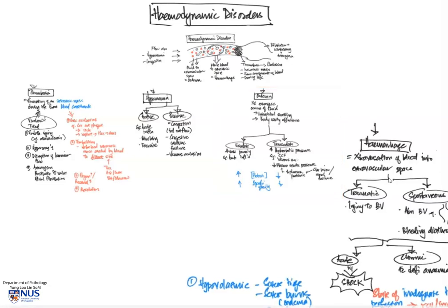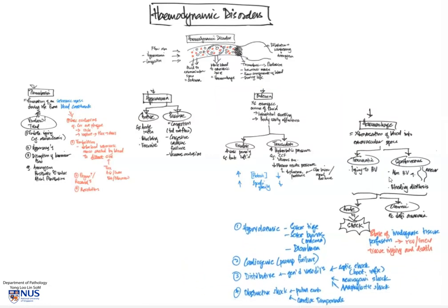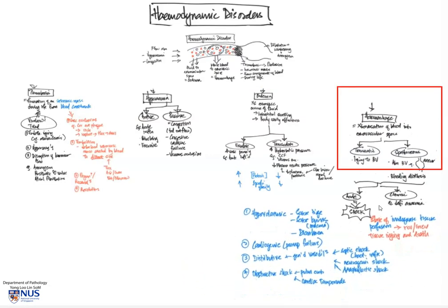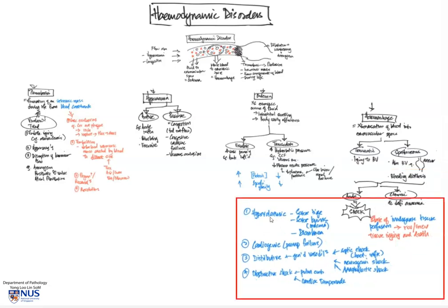And finally, we have looked at hemorrhage, which can be traumatic or spontaneous and acute or chronic, and ending off with a very short discussion on the different types of shock.